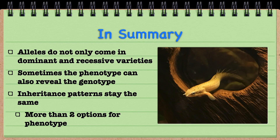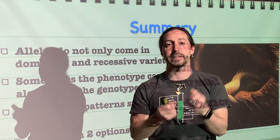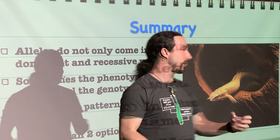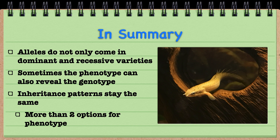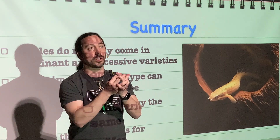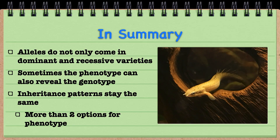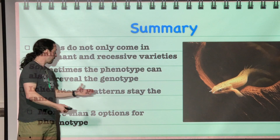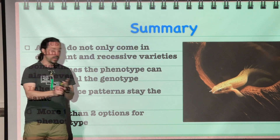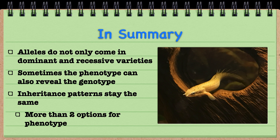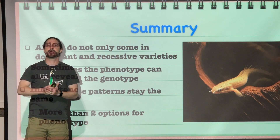In summary, alleles do not only come in just a dominant and recessive variety — there are different ways that alleles can interact. They can interact in a codominant or incomplete dominance interaction. In codominance, both traits are going to be expressed equally; in incomplete dominance, the final phenotype is a mixture or intermediate of both phenotypes. Sometimes the phenotype of an individual can reveal what the genotype is. These inheritance patterns follow the exact same trends whether it is complete dominance, incomplete dominance, or codominance. And now our offspring can have even more variety of phenotype.